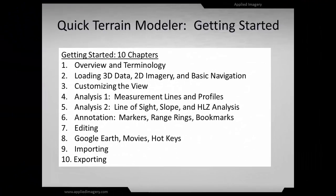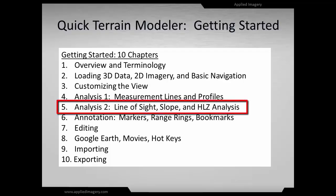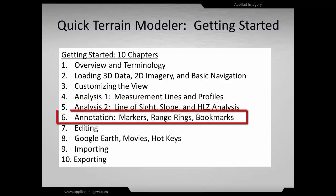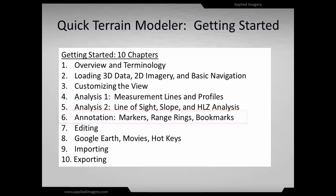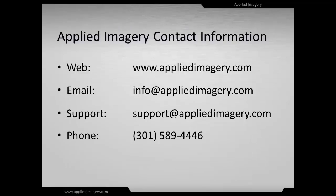That concludes Chapter 5 of the Quick Train Modeler Getting Started series. At this point, you should be comfortable with the Line of Sight, Slope, and HLZ analysis. Our next step will be to do some basic annotations using markers, vectors, and bookmarks. Please view the rest of the series on our website, and contact us if you need any help. We'd love to hear from you.